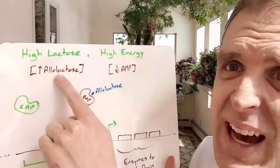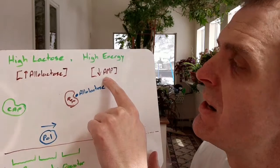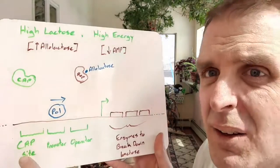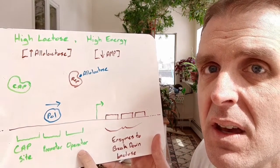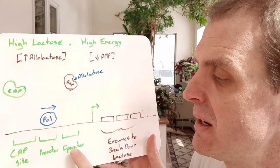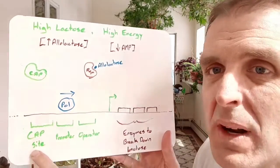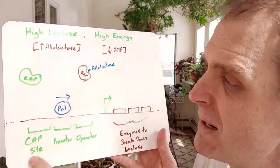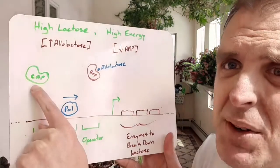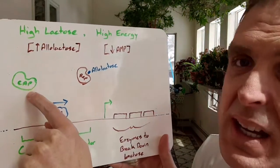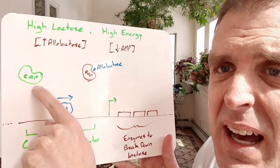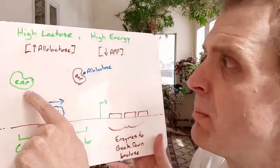High lactose means high allolactose, and high energy means low AMP. In addition to the promoter and operator that we saw on the trp operon, we've got one extra site. It's called CAP site, and then we've got a CAP protein. The CAP protein is not binding the CAP site in this case because CAP does not have AMP to bind to, and so it doesn't bind to the CAP site.